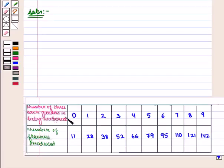Now let us start with the solution of this given question. Here we are given the number of times each garden is being watered. Let us denote it by x and the number of flowers produced, let us denote it by y.